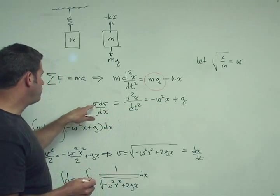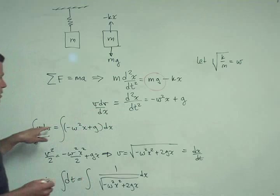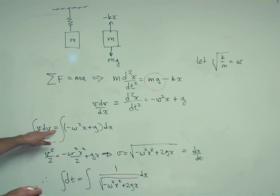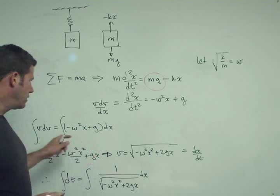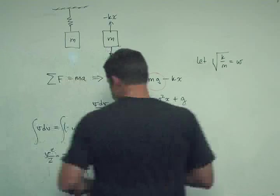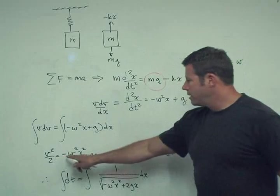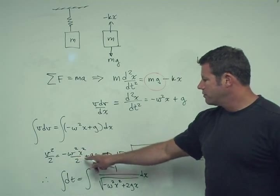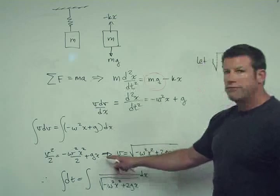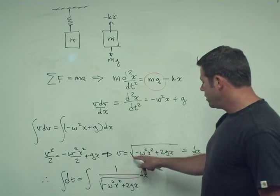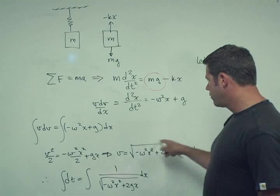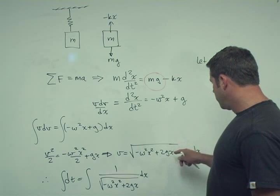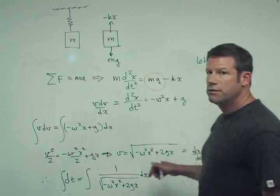And then we knew from previously that equals v dv dx. Now I can separate the variables and get v dv equals that whole thing times dx. Then we integrate both sides, obviously. And we get v squared over 2 equals minus w squared x squared over 2 plus gx. Solving that for v, v equals square root of minus w squared x squared plus 2 gx. That whole thing squared, square root. And then v we know is dx dt.